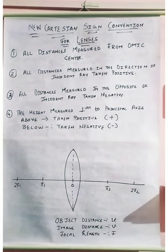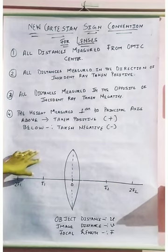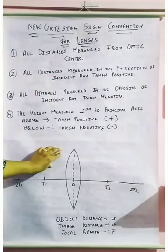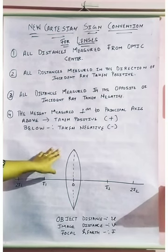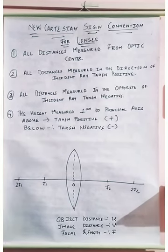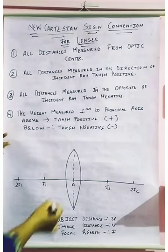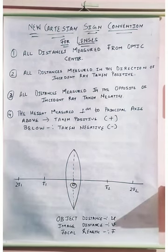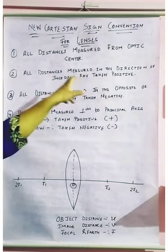Now we are going to talk about the new Cartesian sign convention for lenses, as we have seen in the case of mirrors. It states that all distances are measured from the optic center, and all distances measured in the direction of the incident ray are taken as positive.